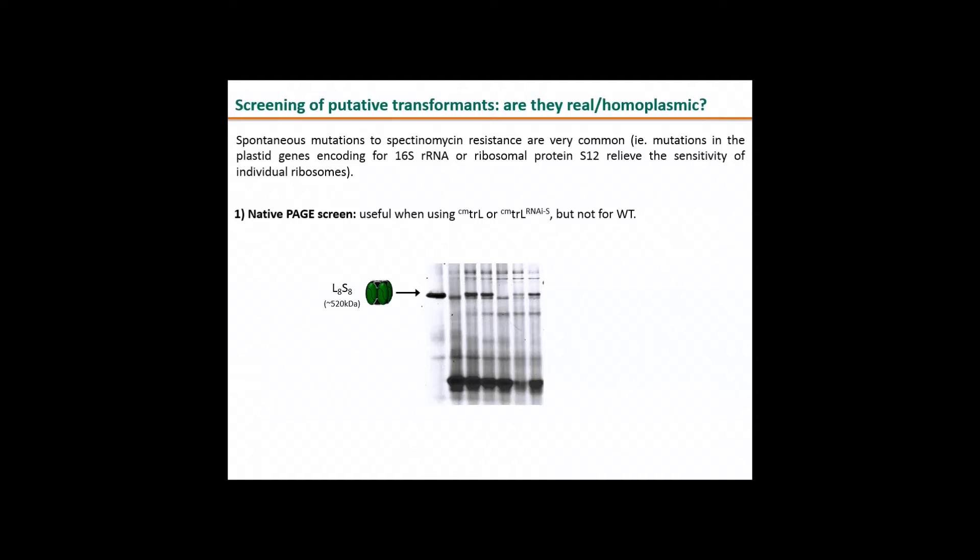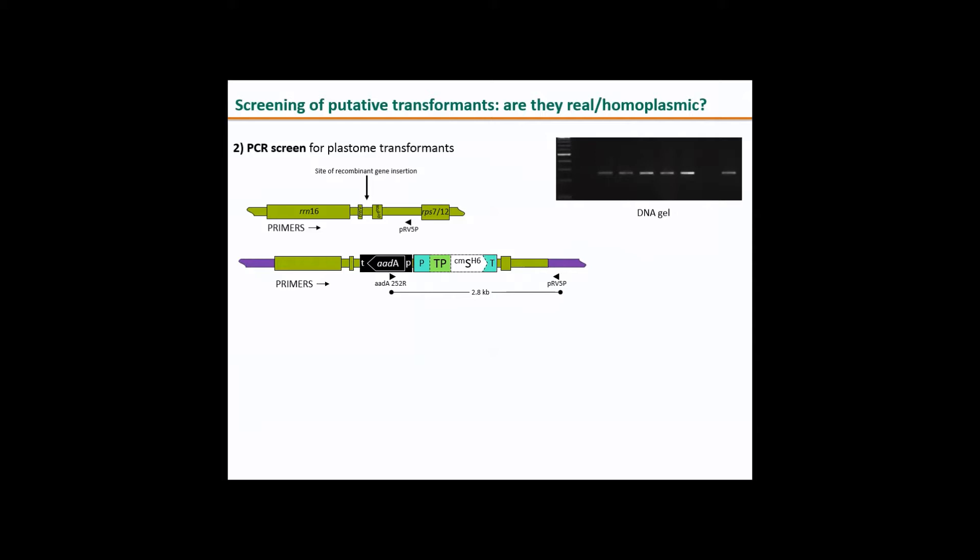You can see that Rubisco in that line runs at high molecular weight, close to 540 kilodaltons. The lines we've developed have a Rubisco which runs much lower. It's an L2 Rubisco, much smaller. So you can see which ones are transformed by comparing the molecular weight. You can see those are transformed, but they're not homoplasmic. They still contain some of the native genome and some transformed. This is a very quick method. But if you're working with wild type and other lines, this might not be the method you can use. Then you can use a PCR screen.